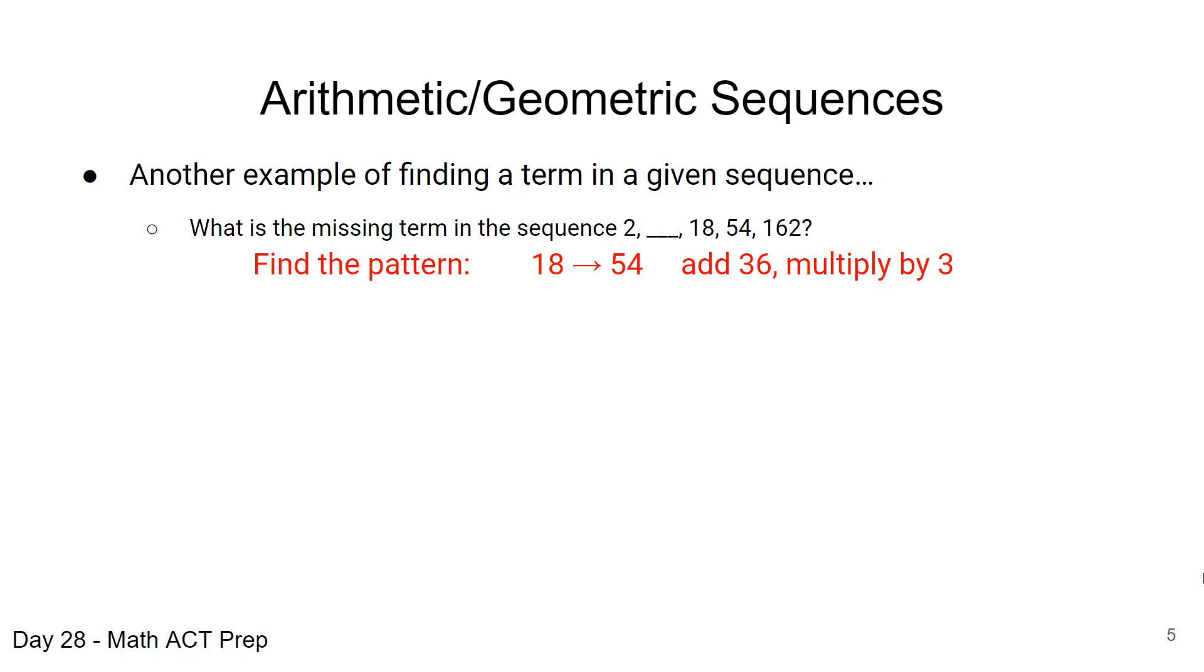If we look from 18 to 54 we could add 36 to get that or you could multiply 18 by 3. So to go from 54 to 162 we have to add 108 which is not 36 so we already know this is not an arithmetic sequence. We're not adding to get to the next term but we can see when we multiply 54 by 3 we get 162, so that would tell us that maybe 3 is our multiplication factor.